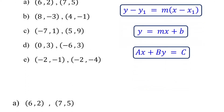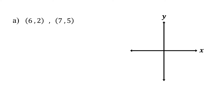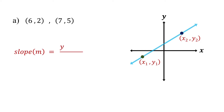The first step is to find the slope of the line using the two points. If we have two points, x1,y1 and x2,y2, the slope of the line that passes through these points is calculated using this formula.